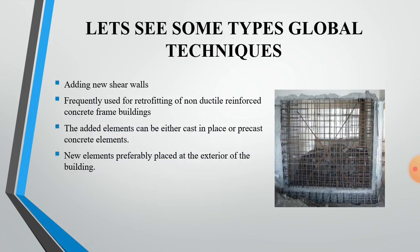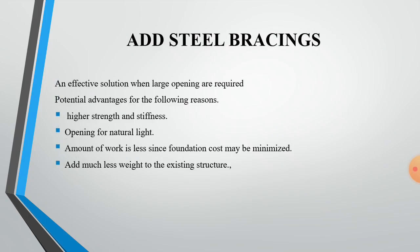Adding a new shear wall is frequently used for retrofitting of non-ductile reinforced concrete frame buildings. The added elements can be either cast-in-place or precast concrete elements, and new elements are preferably placed at the interior of the building. Steel bracing is an effective solution when large openings are required, with advantages of higher strength and stiffness, openings for natural light, less construction work since foundation costs may be minimized, and less weight added to the existing structure.